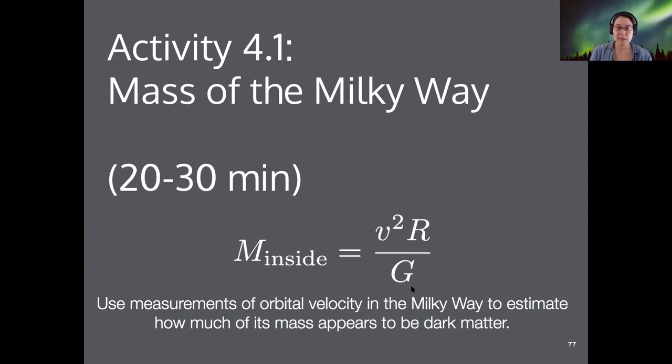You're basically applying this equation. This is a different way to write what we were just discussing. This is the speed of an object, its distance from the center, and this is Newton's universal gravitational constant, big G.